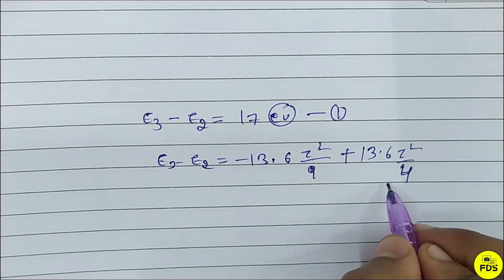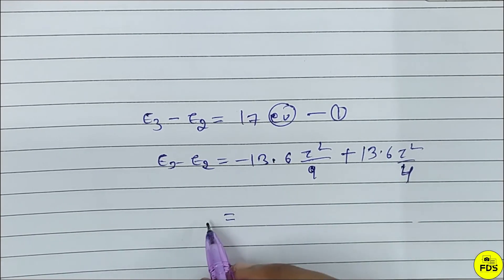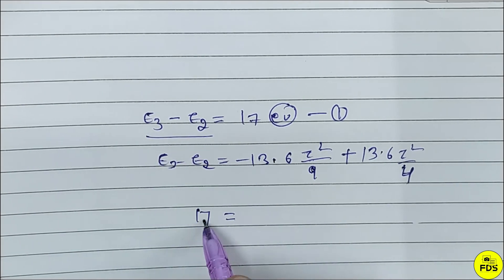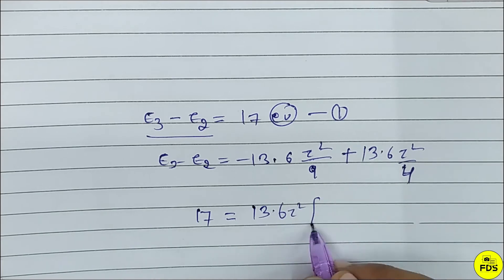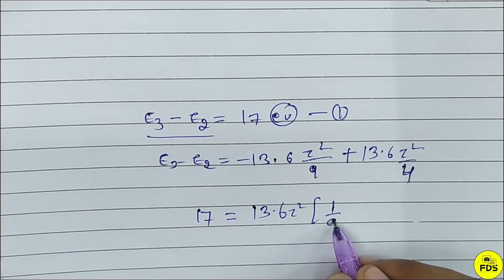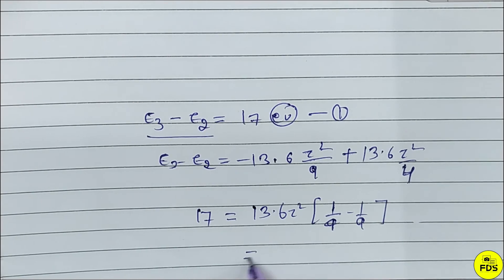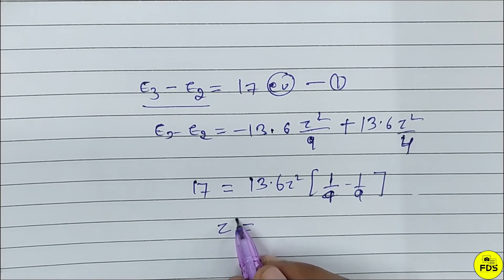If we solve, 1 minus 1 over 9, then we're going to get Z.